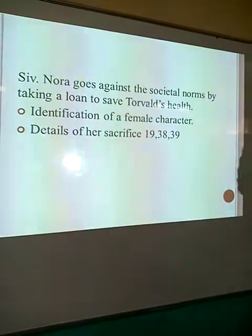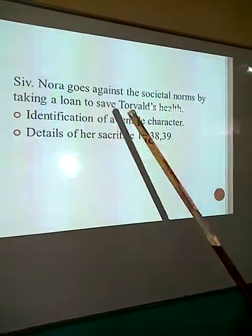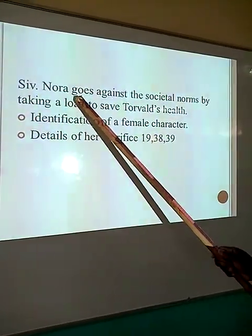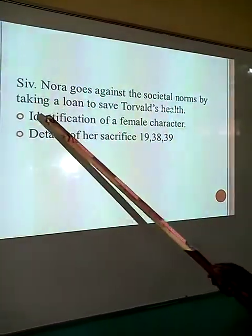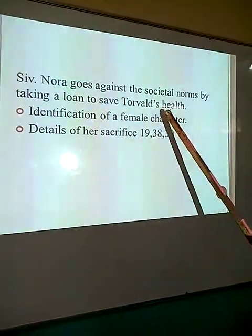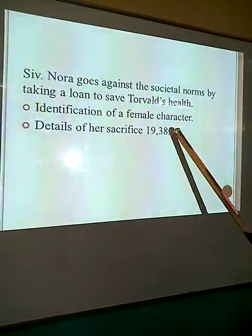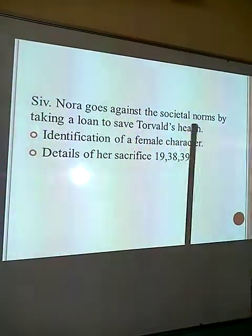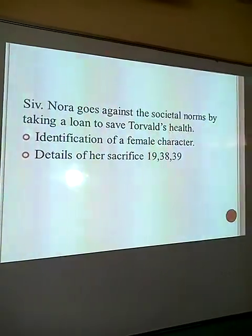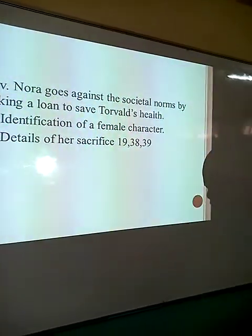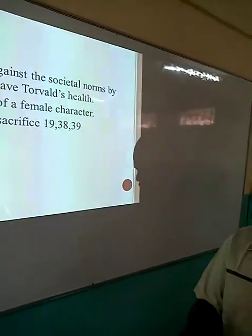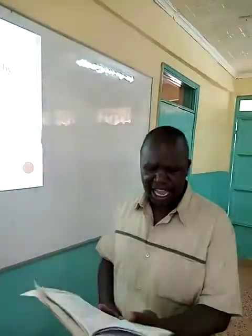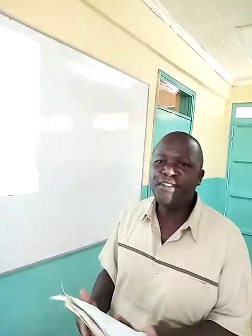The next point is about Nora again — remember we are repeating Nora here. 'Nora goes against societal norms by taking a loan to save Torvald's life.' The character is already identified and the details of the sacrifice are in pages 19, 38, and 39. In page 19 there is a discussion between Nora and Mrs. Linde. Mrs. Linde feels proud of having accomplished certain tasks for people close to her — she saw her mother die comfortably and gave her younger siblings something to rely on.